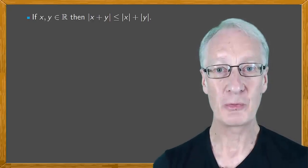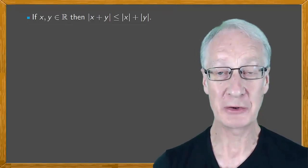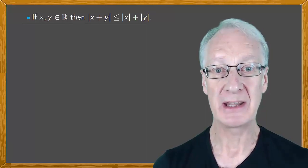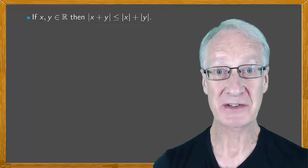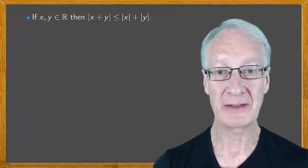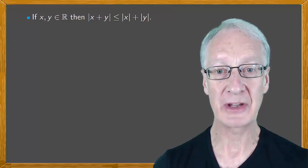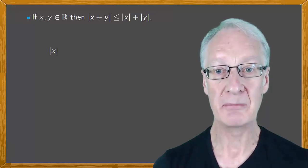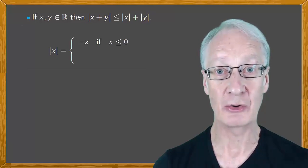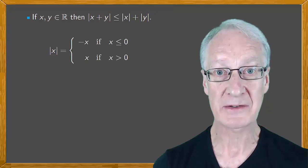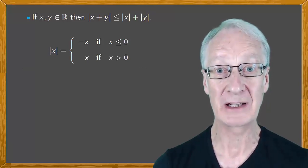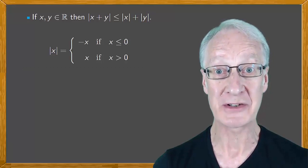First, remember what we mean by absolute value, or modulus. A simple way to think of it is just the value of a number without any minus sign. But the formal definition is, if x is a real number, then mod x is minus x if x is less than or equal to zero, or x if x is greater than zero. The absolute value of zero is just zero.